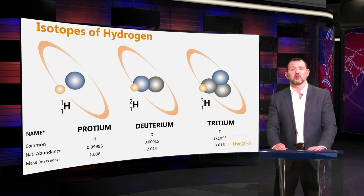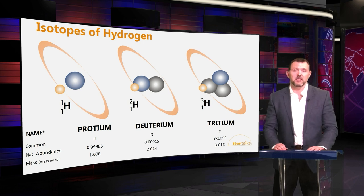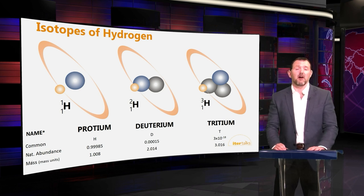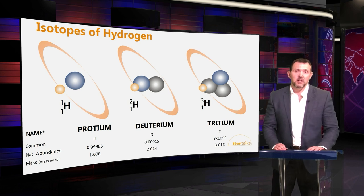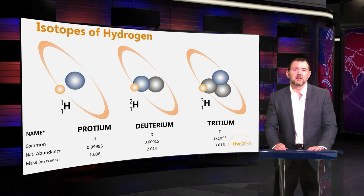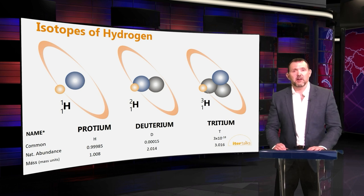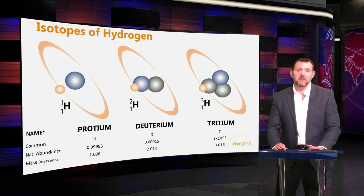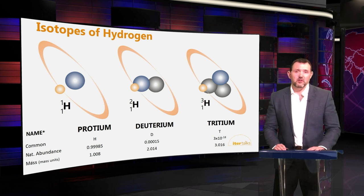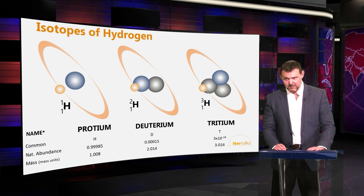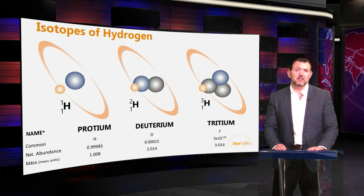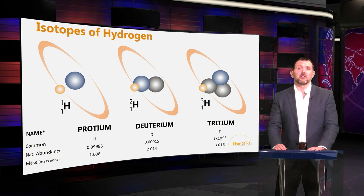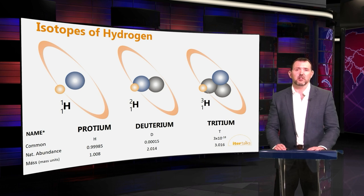The first isotope is protium — one proton in the nucleus — and is the most abundant; this is what we normally think of when we talk about hydrogen. The second hydrogen isotope is deuterium: the proton is joined by a neutron, roughly twice the weight of protium, with a natural abundance of around 150 parts per million. Finally, the super-heavy isotope — tritium — has two neutrons in the nucleus. It has a very very low natural abundance of 10 to the minus 18, and is created in the upper atmosphere through the interaction of cosmic rays and nitrogen.